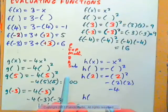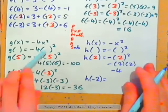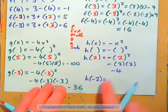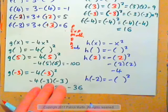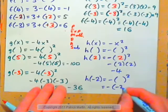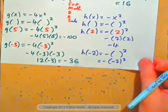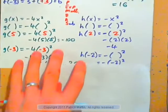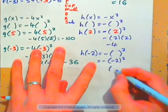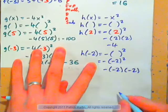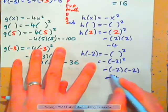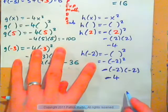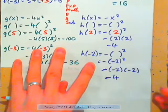Figure out h of negative 2. h of x is negative x squared, so h of negative 2 would be negative parentheses squared — or, in other words, negative negative 2 squared. We have the squared on the negative 2, so that's negative 2 times negative 2, with the negative on the outside. Negative 2 times negative 2 is positive 4, and so this negative comes down: we get negative 4 again. h of negative 2 is also negative 4.